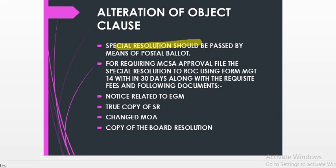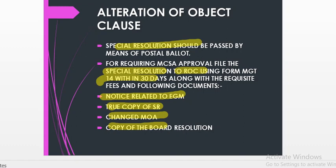Second, we have to get the approval of the Ministry of Corporate Affairs. The special resolution has to be filed with the Registrar of Companies using Form MGT-14 within 30 days, along with the requisite fee, notice related to the extraordinary general meeting, a certified true copy of the special resolution, the altered memorandum of association, and a copy of the board resolution, which is not obligatory but may also be filed.